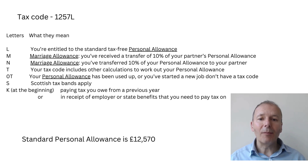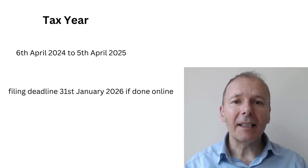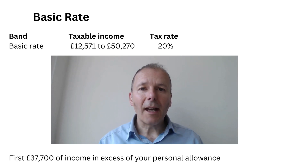In the worst possible case your tax code could be 0T, meaning you have no tax code because there's currently no record of you on the HMRC tax system. The tax year runs from the 6th of April until the 5th of April, and the filing deadline is the 31st of January in the following year if filed online.